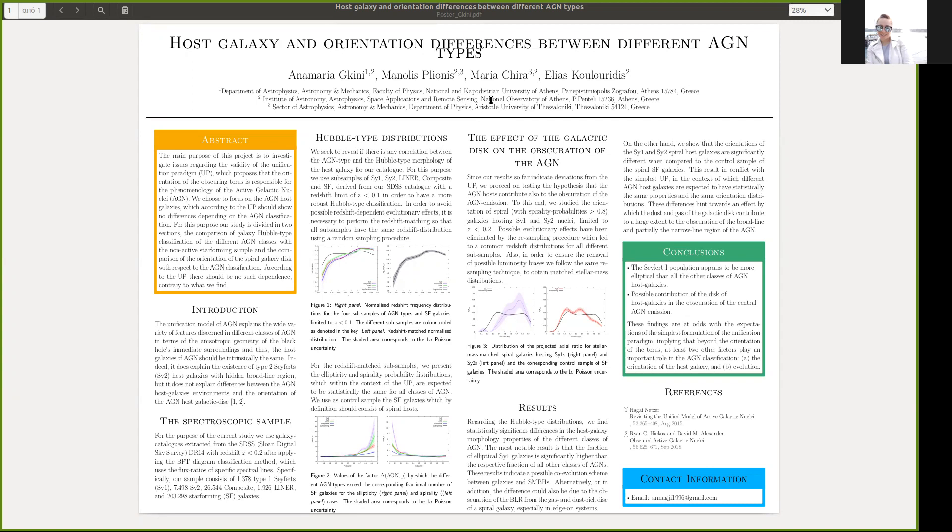After having done this procedure, we plot the spirality and ellipticity probability distributions normalized to that of the star-forming. We note that the Seyfert-1 sample has a higher probability of having an elliptical host than Seyfert-2s, LINERs, and composites. These results indicate a possible coevolution scenario between the galaxies and the supermassive black holes.